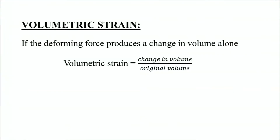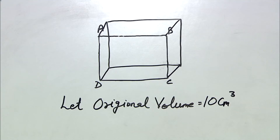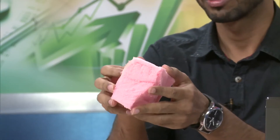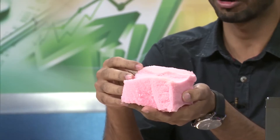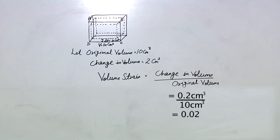The second type of strain is volumetric strain, which states that if the deforming force produces a change in the volume alone. As you already know, volume is a three-dimensional quantity. We can take the example of a sponge, which has an original volume — let us assume it to be 10 cm³. If we compress or stretch the sponge, let us say the change comes out to be 10.2 cm³, so the change in volume is 0.2 cm³. When we take the ratio of change in volume to original volume, it gives the volumetric strain. Here again, there will be no SI unit or dimension.